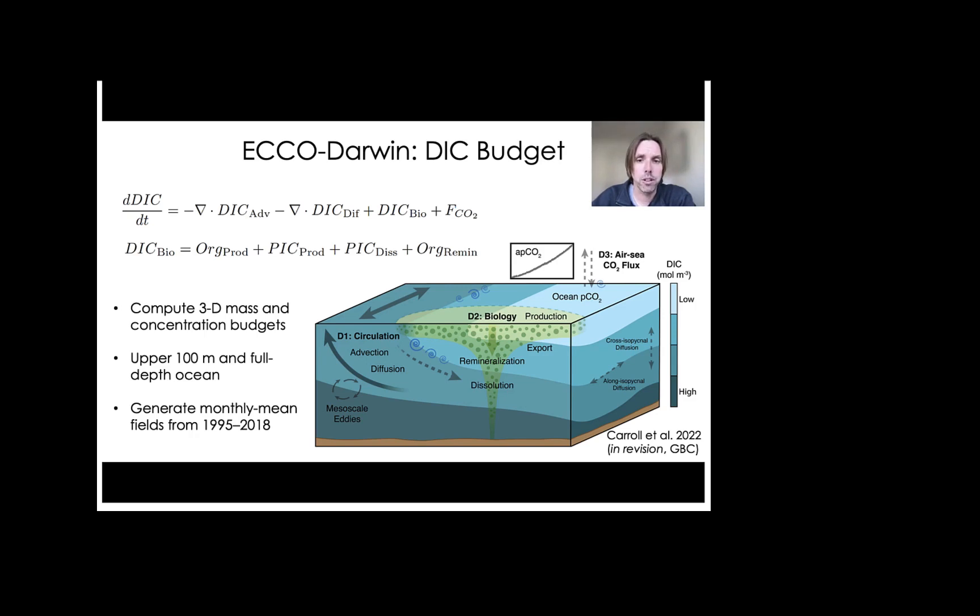Now the biology component, which is DICbio, can be further decomposed into contributions from organic production, production of particulate inorganic carbon, dissolution of particulate inorganic carbon, and organic remineralization. We then compute 3D mass and concentration budgets across the global ocean. And we do this within the upper 100 meters and also the full depth ocean. And finally, we generate monthly mean fields from 1995 to 2018.